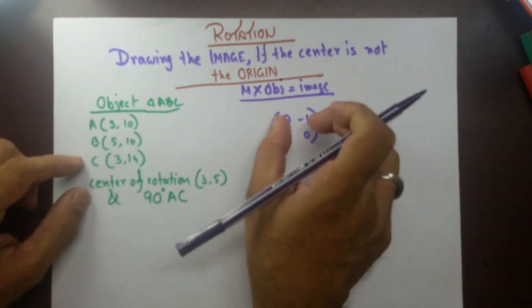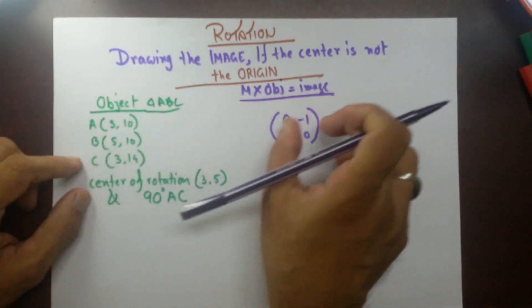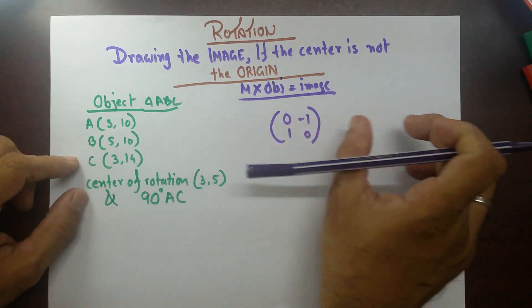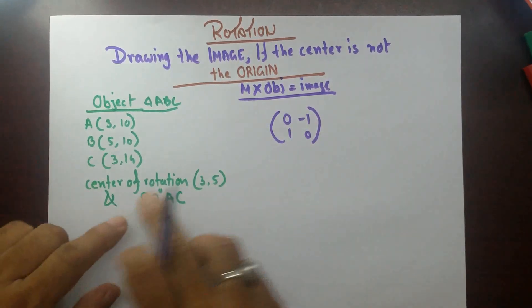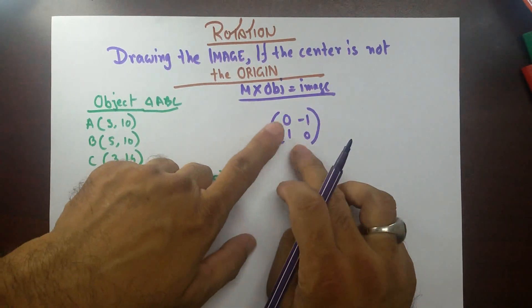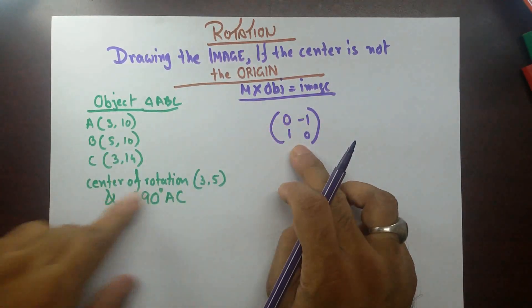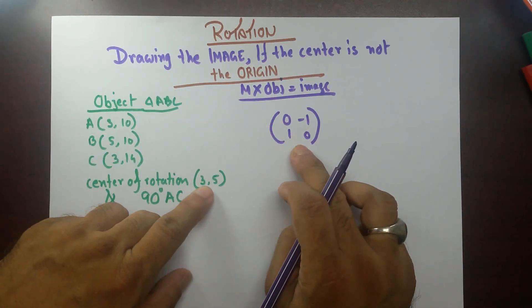Now, if I multiply these coordinates with this transformation matrix, I'm not going to get the actual image. Because this transformation matrix only applies when the center is 0,0. So, what are we going to do?